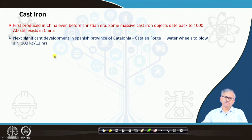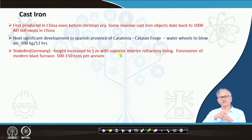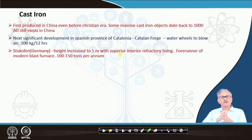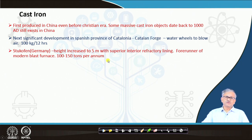They used to produce around 100 kg per 12 hours, a significant increase. Then came the Stückofen in Germany — the Stückofen furnace — where the height was increased to 5 metres and a superior refractory lining was there to restrict heat loss to the atmosphere. Its shape is more or less like a modern blast furnace, so it is called the forerunner of the modern blast furnace. It used to produce 100 to 150 tons per annum — quite a large amount at that time.